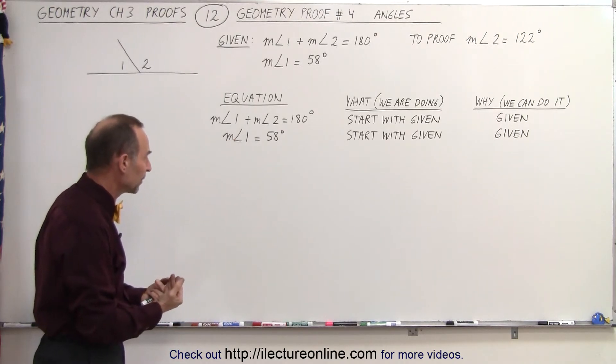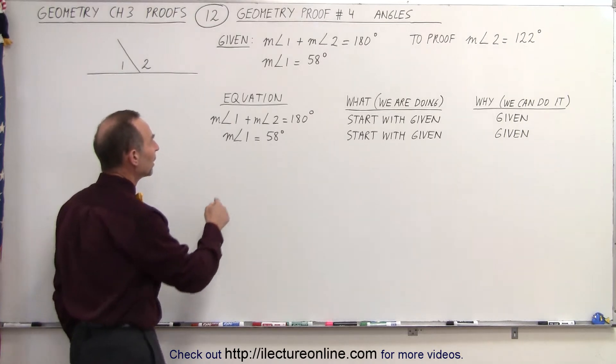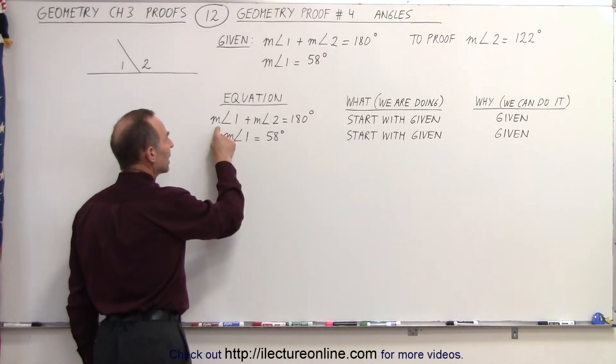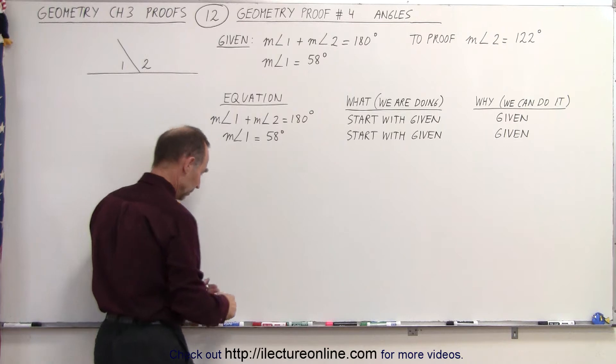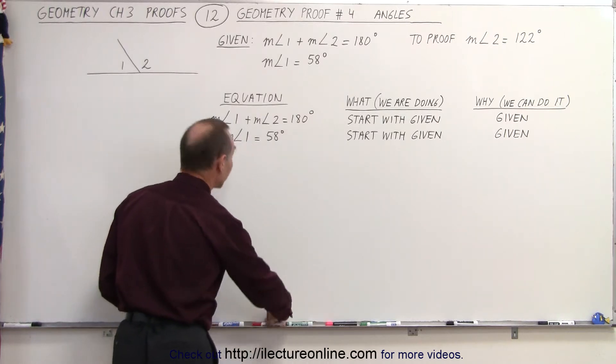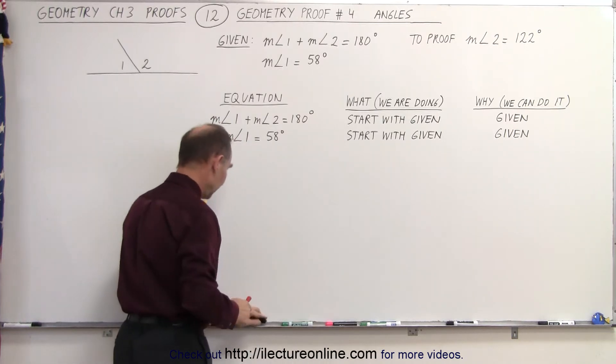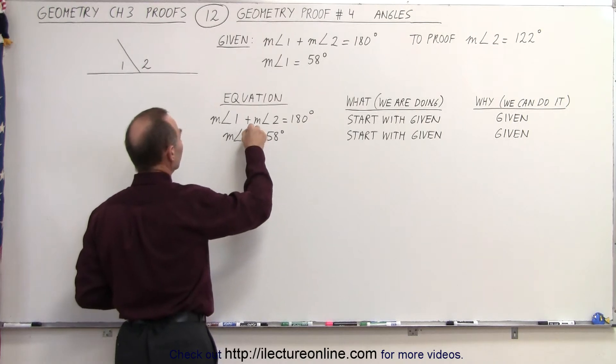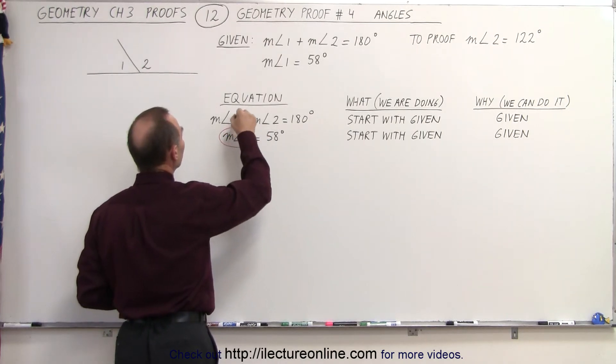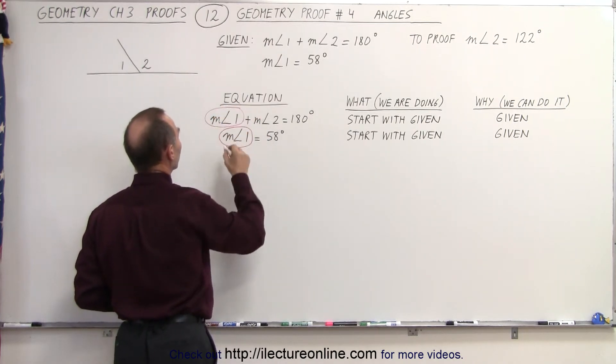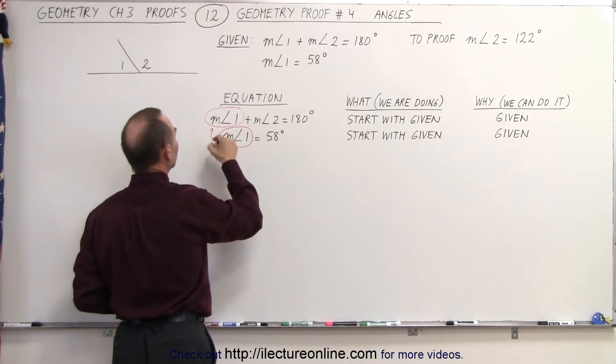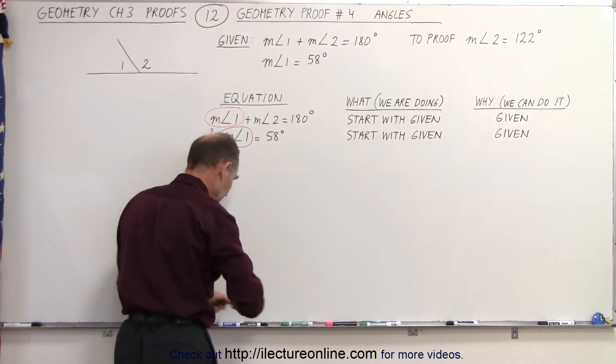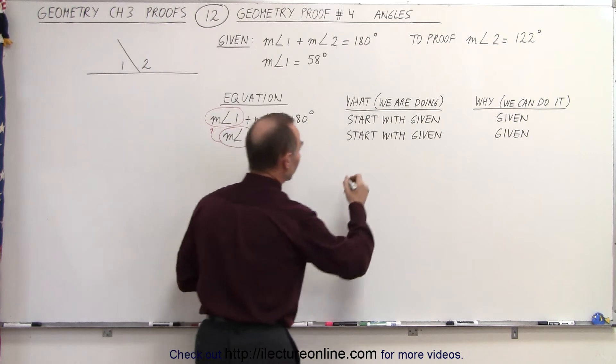So where do we go next? Well, what we probably want to do is replace the measure of angle 1 in here by what it's equal to. Notice that we have the measure of angle 1 and the measure of angle 1. So we're going to substitute what this is equal to into the other equation. So that's called a substitution.